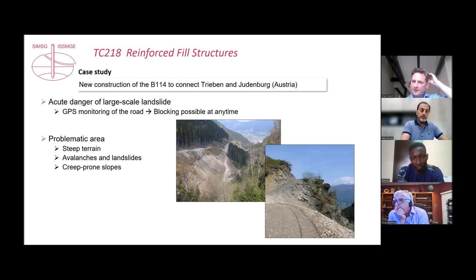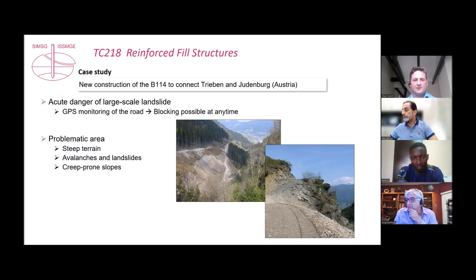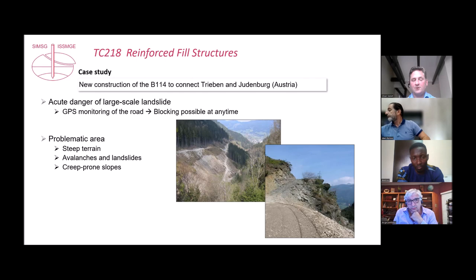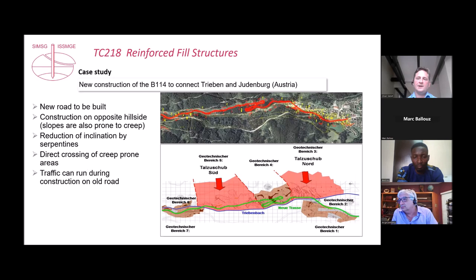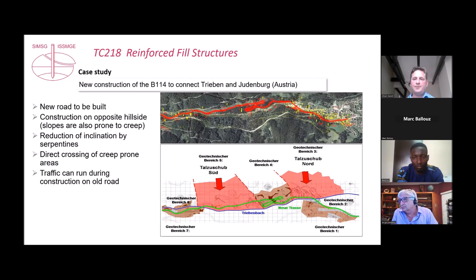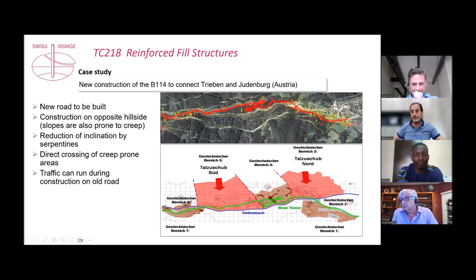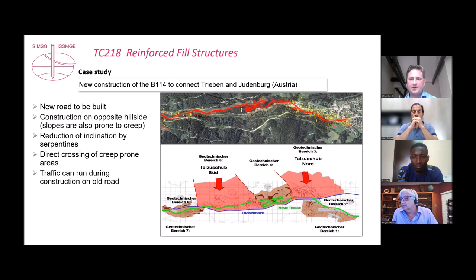They started monitoring the whole road by GPS so they could block it at any time if movement worsened. They also had to think of an alternative. The landscape is very steep terrain with danger of avalanche, landslides, and creep-prone slopes everywhere. What they finally did was construct a completely new road on the opposite side of the valley — shown as the red line in the upper picture.